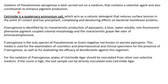We know that Pseudomonas aeruginosa has the ability to produce a pigment, and the pigment production can be enhanced by using some components, which we will study now. Cetrimide is a quaternary ammonium salt — we have learned that — and it acts as a cationic detergent.